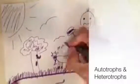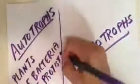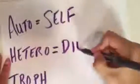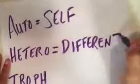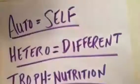One way to study interactions in an ecosystem is to follow the flow of energy through that ecosystem. Organisms can be classified in an ecosystem by their mode of nutrition, so the two main categories are autotrophs and heterotrophs. Looking at our roots: auto means self, hetero means different, and troph means feeding or nutrition.